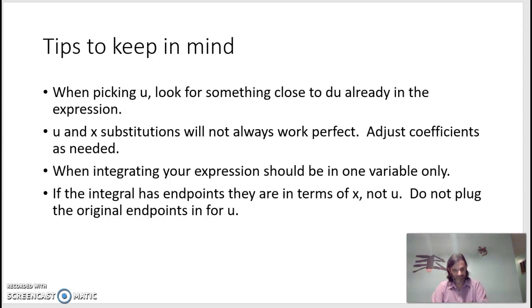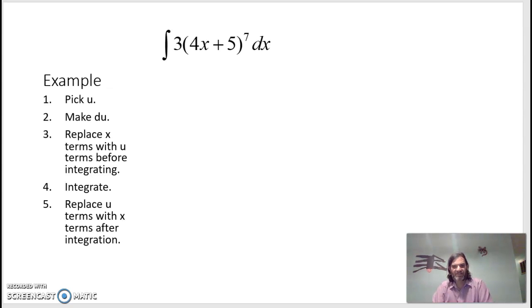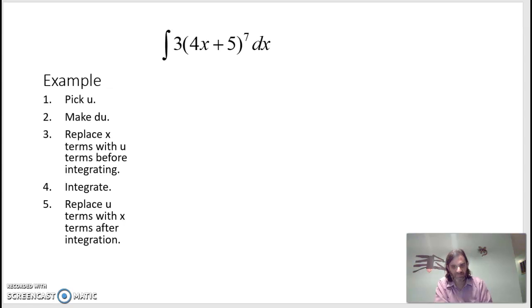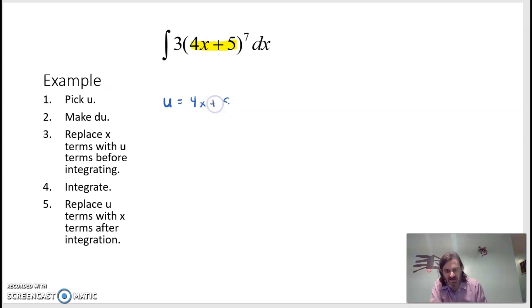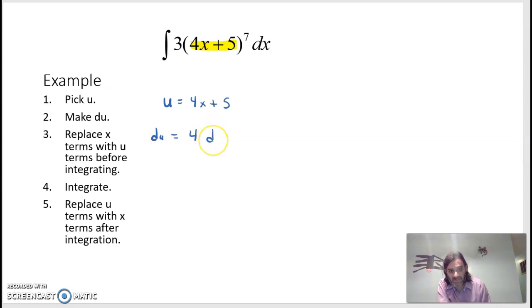For our first example, we have the integral of 3 times (4x+5) to the seventh dx. We need to pick a u, and since we're trying to reverse a chain rule, we look for something that may have been the inside part. Here, 4x+5 is the inside, so let u = 4x+5. Taking the derivative of both sides gives du = 4 dx, since the derivative of 4x is 4 and the derivative of 5 is 0.